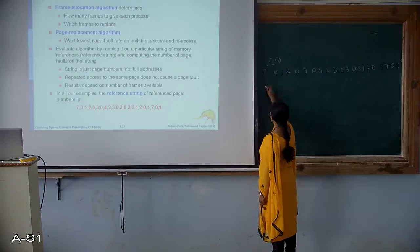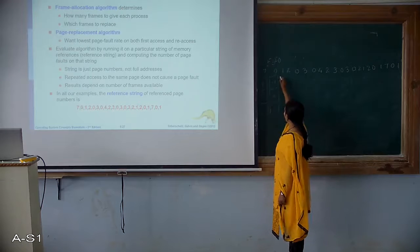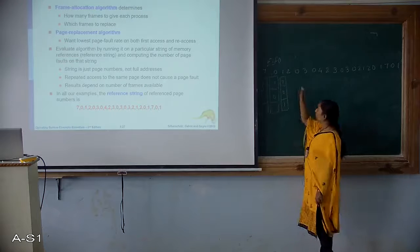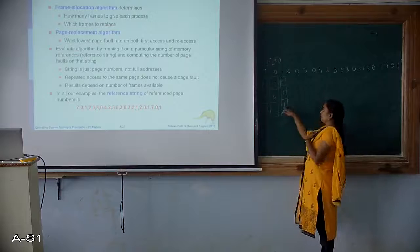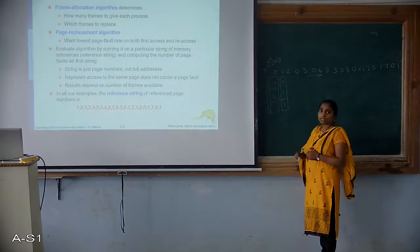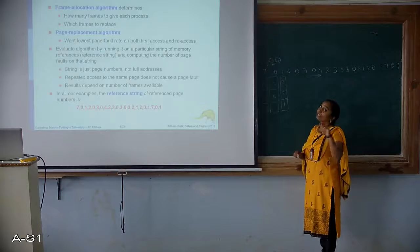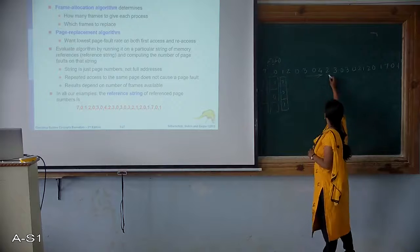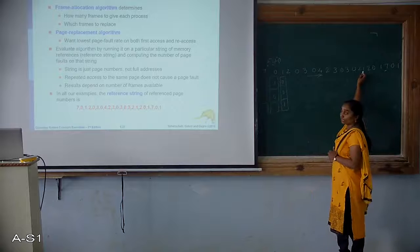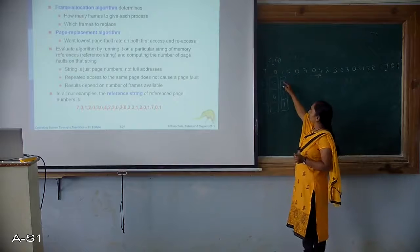So first 7 is required — put in 7. 0 is required — put 0. Then 1 is required — put 1. Now the frame is full. We require 2, so we look at which of the 3 frames holds a page not needed in the near future. Looking ahead: 7 appears farthest away, 0 is needed soon, and 1 is needed before 7. So 7 is the page not needed in the near future. Replace 7 with 2.